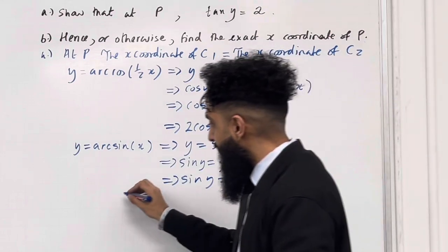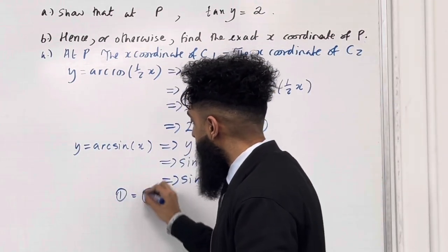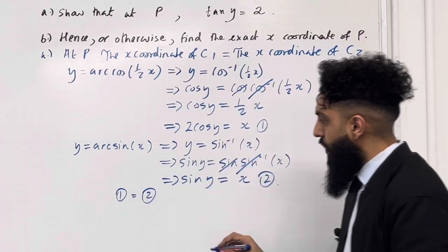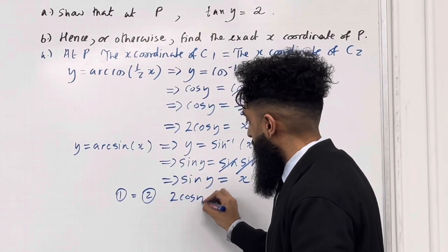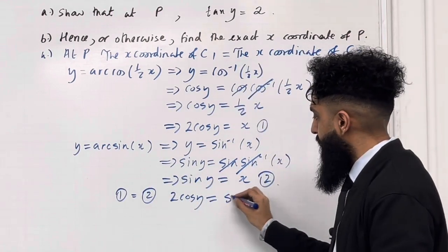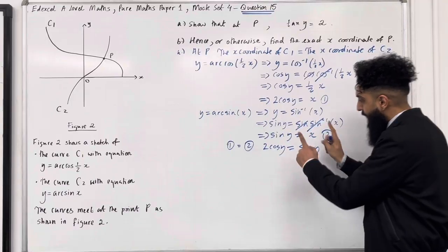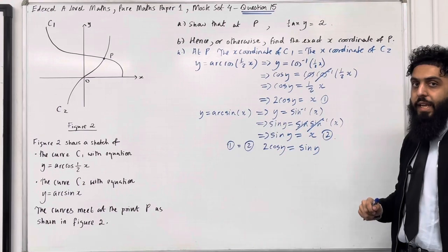My next step is to set equation 1 equal to equation 2. So I've got 2cos y = sin y. I want to transform this equation into tan y = 2.